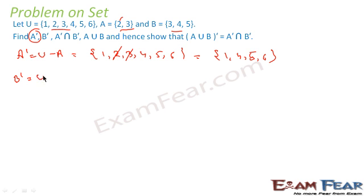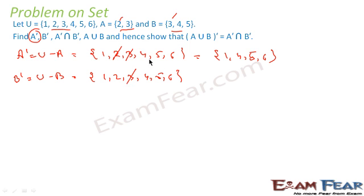Now find B complement, which is U minus B. Write U: {1, 2, 3, 4, 5, 6}. B has elements 3, 4, 5. 3 is in U — subtract. 4 is in U — subtract. 5 is in U — subtract. So B complement is {1, 2, 6}.